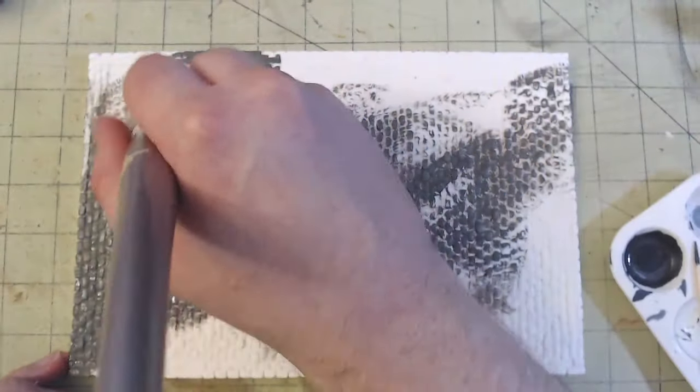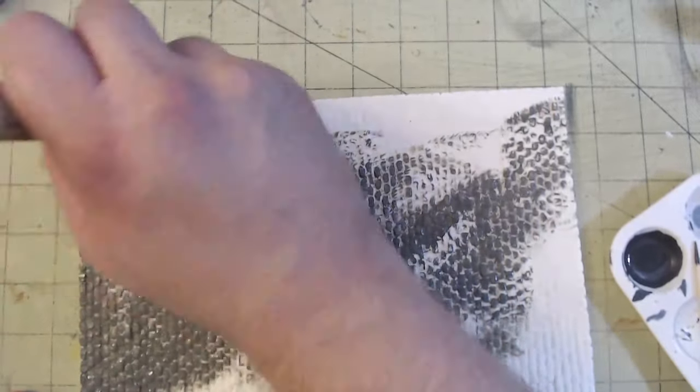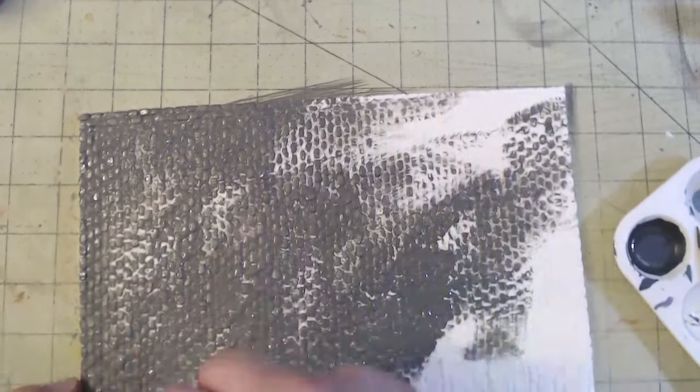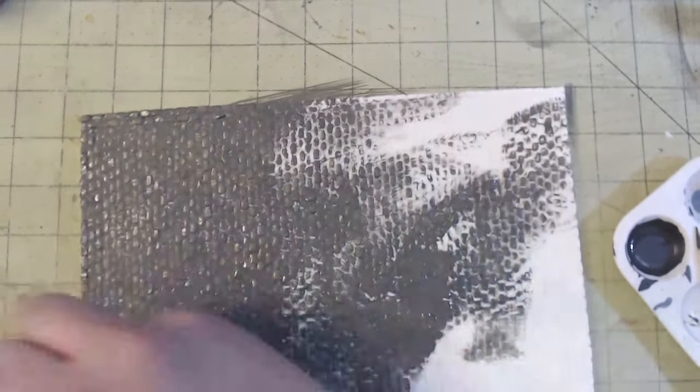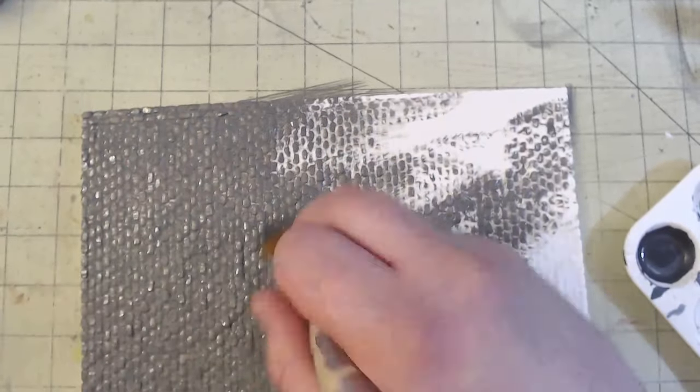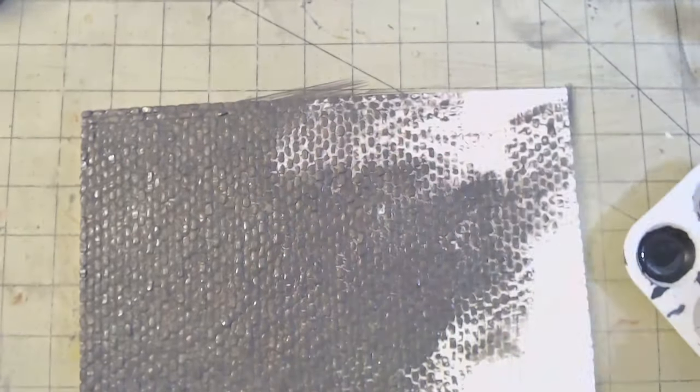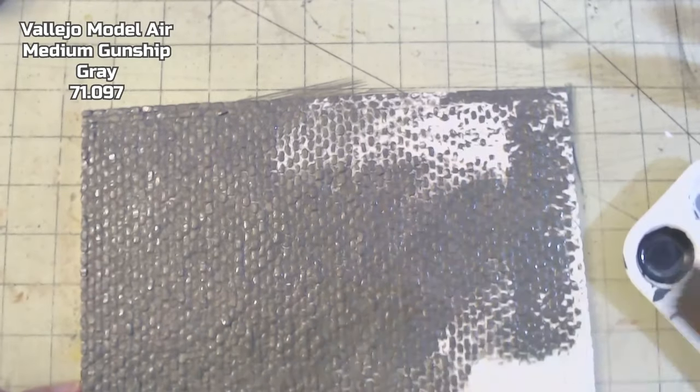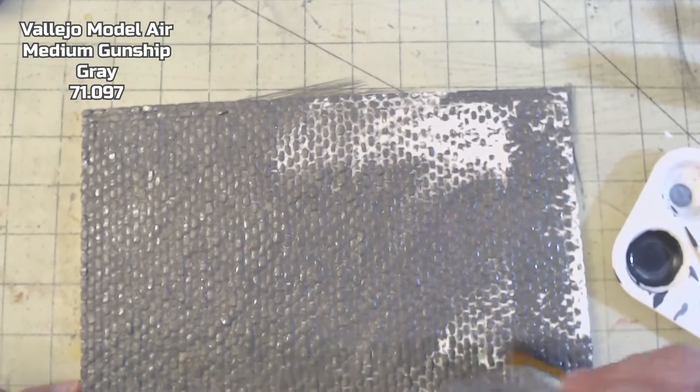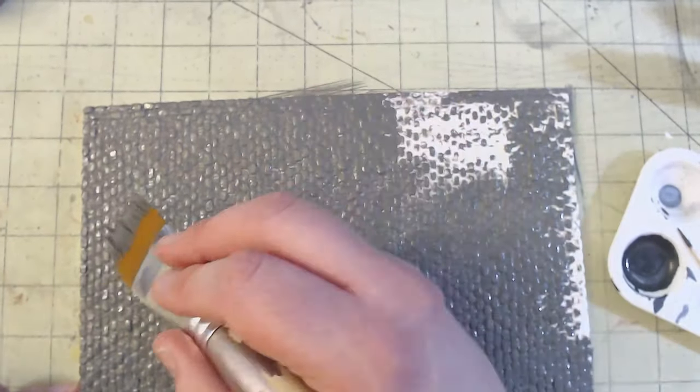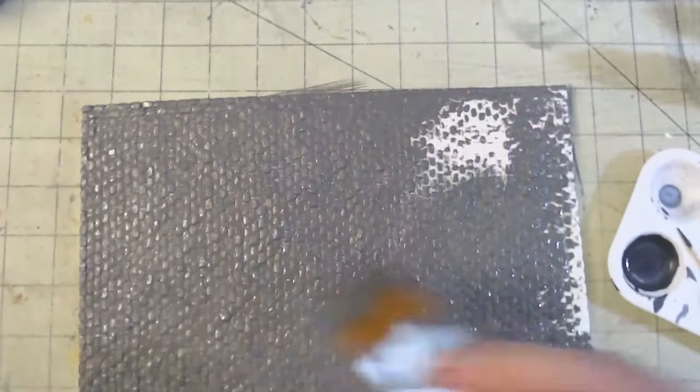While I let that dry, I went ahead and started work on the base. I was able to pick up the Vallejo Scenics cobblestone street section as a base for the build. The Vallejo Scenics are plaster cast diorama bases that just need paint and then they'll be good to go for displaying your models. First, I gave the entire thing a coat of medium gunship grey 71.097 mixed with a drop or two of nato black. The plaster was quite thirsty and so I had to go over some sections numerous times to get good coverage.